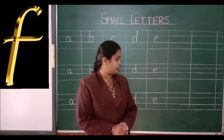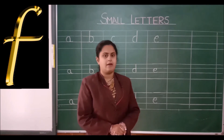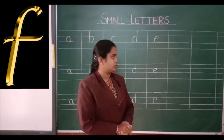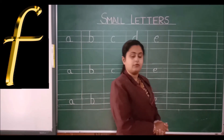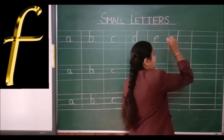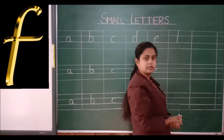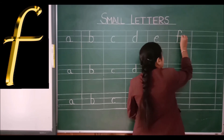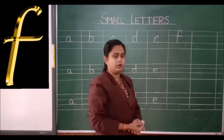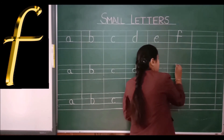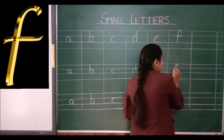After E, what will come — letter F, F for fish. To write letter F, you have to make a standing line like this. Then you have to make a curve like this and a sleeping line.